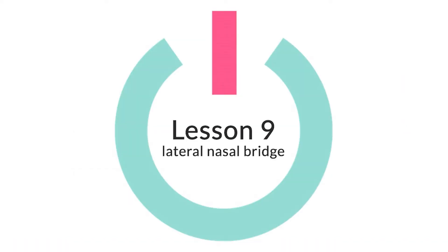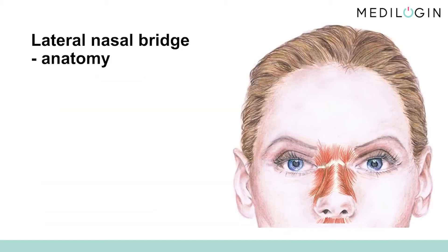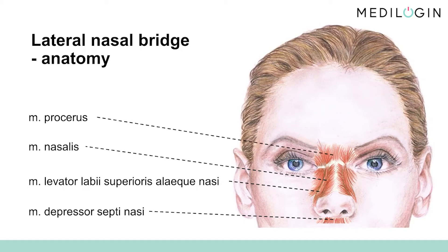Lesson 9: Lateral Nasal Bridge Bunny Lines. Here you can see the formation of wrinkles on the lateral nasal bridge during maximal muscle contraction, popularly known as bunny lines. The following muscles act on the nose: the nasalis, the depressor septi nasi, the levator labii superioris alaeque nasi, and the procerus muscle.